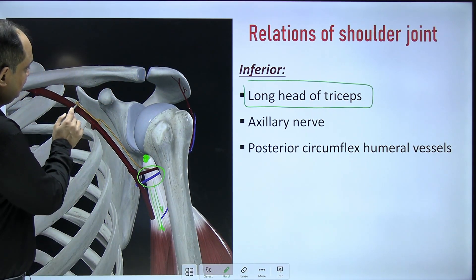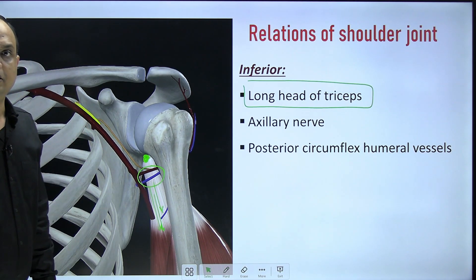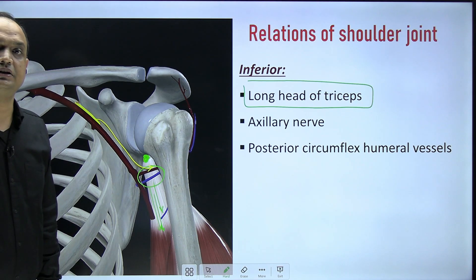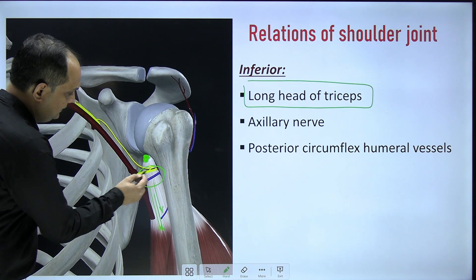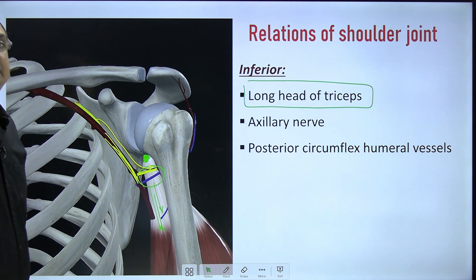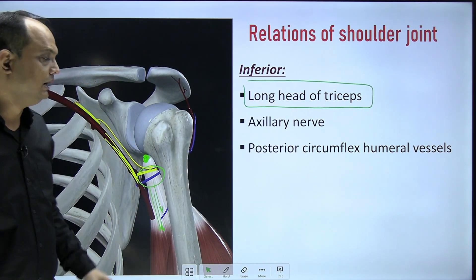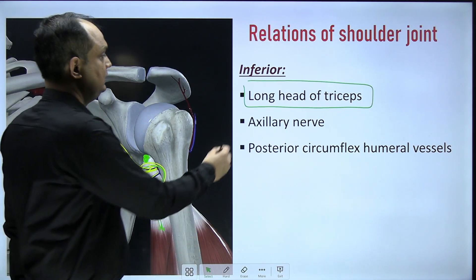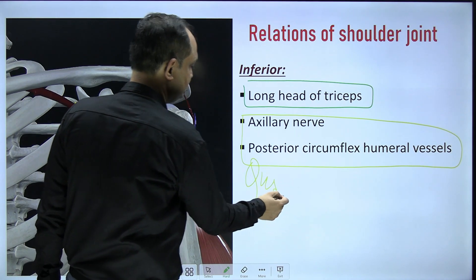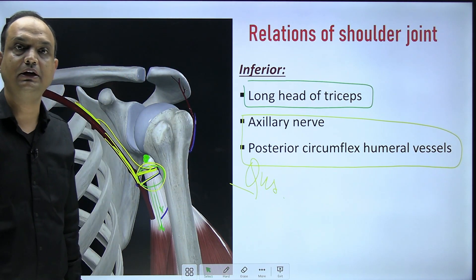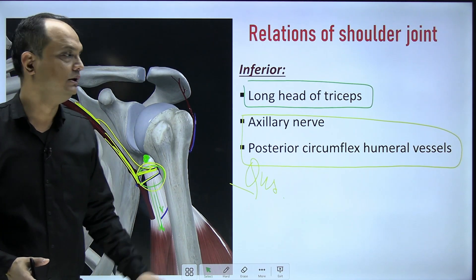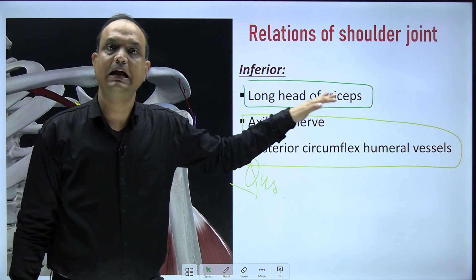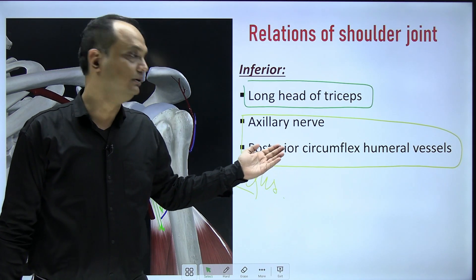The important inferior neurovascular structures are the axillary nerve and the posterior circumflex humeral artery. The axillary nerve arises from the posterior cord and passes posteriorly, accompanied by the posterior circumflex humeral artery, which is a branch of the third part of the axillary artery, along with its accompanying vein. This is a very commonly asked exam question: if dislocation occurs at the shoulder joint, which nerve has the highest probability of damage? The answer is the axillary nerve.